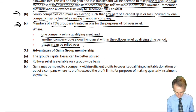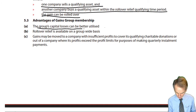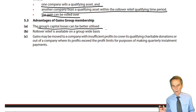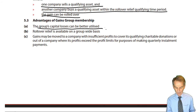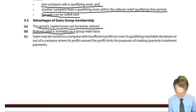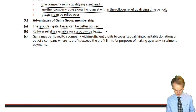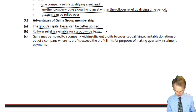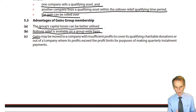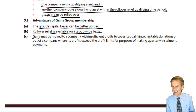What are the advantages of gains group membership? The group's capital losses can be better utilised — we don't have to leave an unused capital loss to carry forward in one group company while having a capital gain charged to tax this period in another. We can match them. Rollover relief is available on a group-wide basis — one gains group member sells, a different gains group member or members buy — within the same time scale of one year before to three years after the disposal date. We might also use the matching election where there are no losses, only gains.